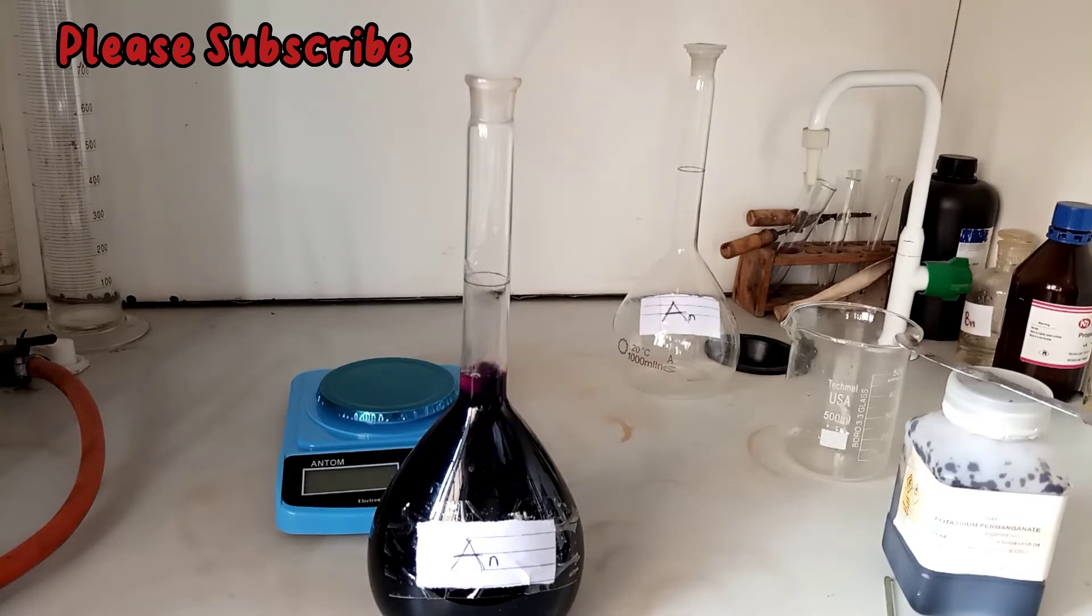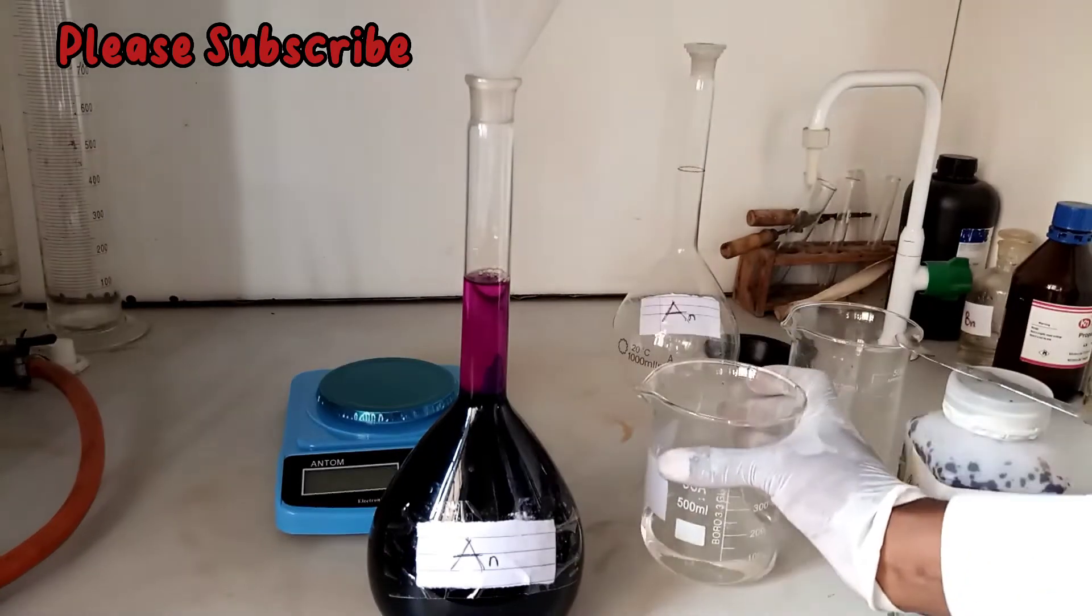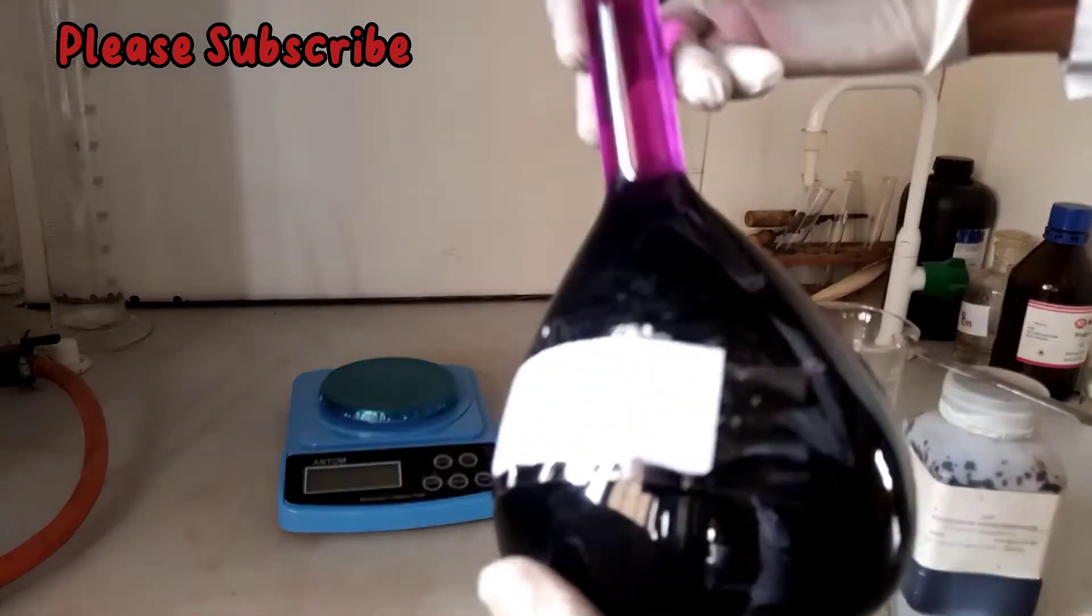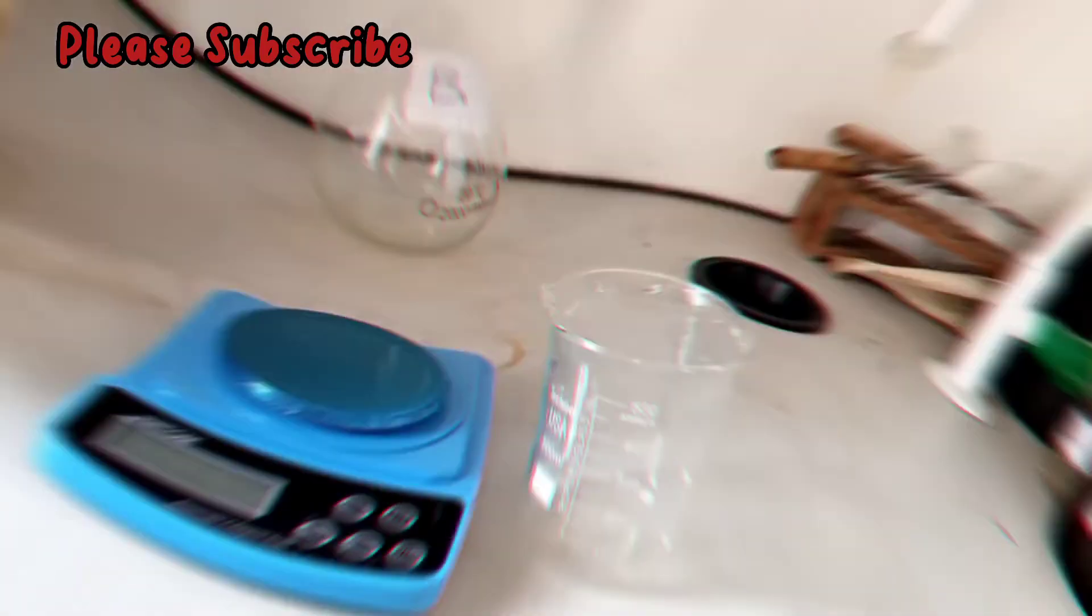Ensure you take readings at the meniscus. So this is our 0.02 mole of potassium permanganate per dm³. This is how you prepare it.